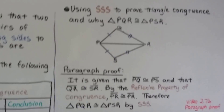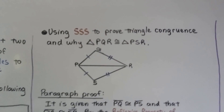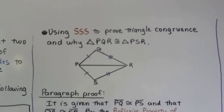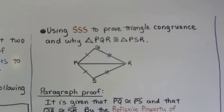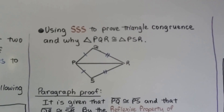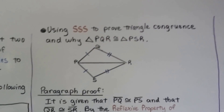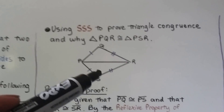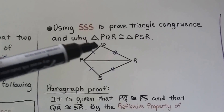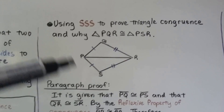Using SSS to prove triangle congruence and why triangle PQR is congruent to triangle PSR. First thing we should do is take a good look at this diagram. We can see there's a triangle here and a triangle here, and it kind of looks like a reflection across PR.